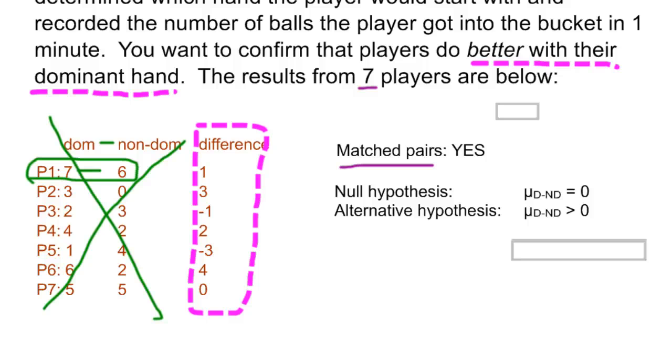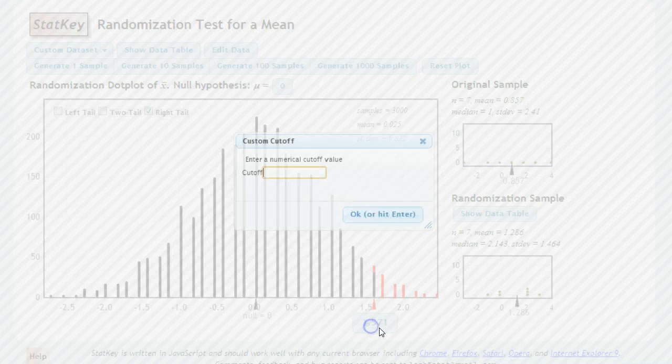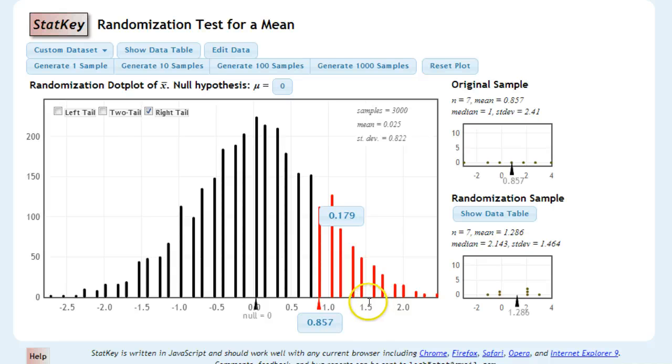And in this case, we're saying better than, so instead of extreme, we're going to say greater than. So our data says that we found a mean of the differences to be 0.857. So I'm going to go right tail, and I'm going to go 0.857.